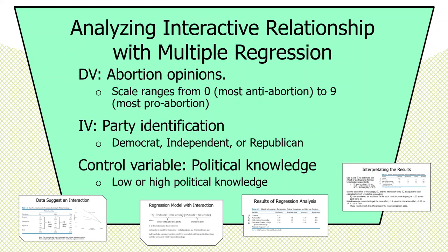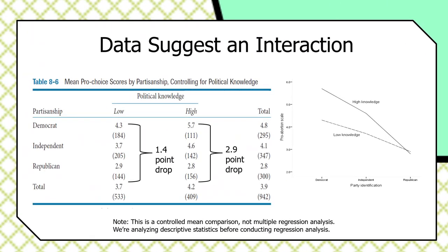The control variable is political knowledge, modeled as a dummy taking on two values — respondents are classified as having low political knowledge or high political knowledge. Let's look at a mean comparison analysis of this problem: mean pro-choice scores by partisanship controlling for political knowledge. Among low knowledge respondents, Democrats scored 4.3, dropping to 3.7 among independents and 2.9 among Republicans. Summarizing the effect of partisanship for low knowledge respondents, the scale drops 1.4 points across the range of the independent variable — going in the hypothesized direction, and a noticeable effect.